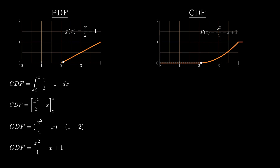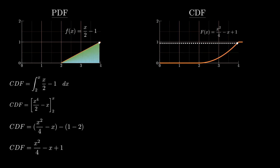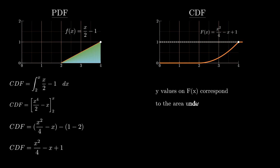If you watch the animation play out for a moment, you'll recognize that the y-values on the cumulative density function are representative of the area under the probability density function. Now let's solve this problem. We've got the probability density function given, we are asked to find the cumulative distribution function — which is the integral from the lower bound up to x — and then using that CDF we're going to find some probabilities.